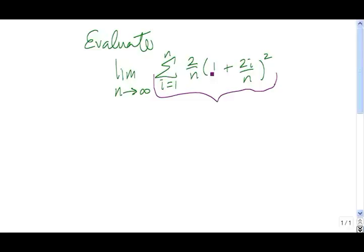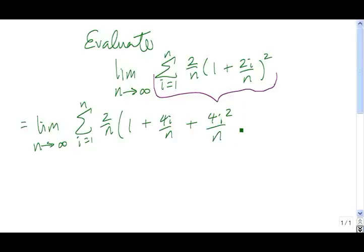So to find a closed form expression for this, we're going to start by foiling this 1 plus 2i over n raised to the second power. So we have 1 plus 2 times 1 times 2i over n, so that's 4i over n, plus 2i over n quantity squared, so that's 4i squared over n squared.